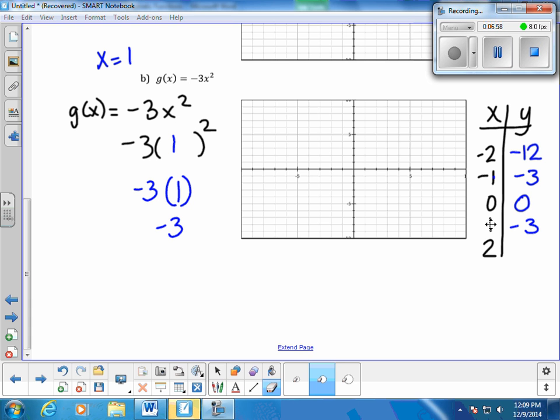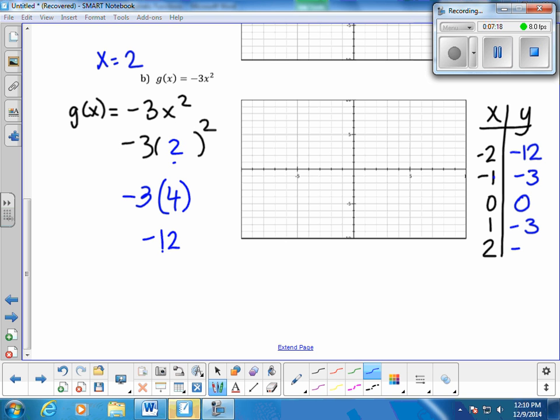And our last point that we're going to work with, if we get a good idea of our graph, we won't need to do any more points. If I don't have a nice picture, I'll just need to add some more points to this thing. So we're going to do an x is 2 this time. 2 squared is 4, and then 4 times negative 3 is going to be negative 12.